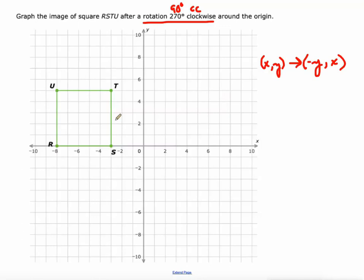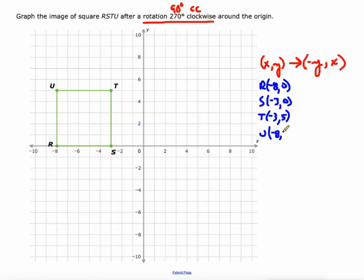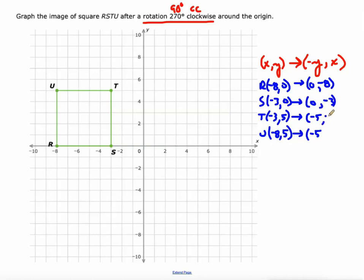We're given a rectangle with vertices: R at (-8, 0), S at (-3, 0), T at (-3, 5), and U at (-8, 5). Applying the 90 degree counterclockwise rule — new X is the opposite of old Y, new Y is old X — the new X values are 0, 0, -5, -5 and the new Y values are -8, -3, -3, -8.